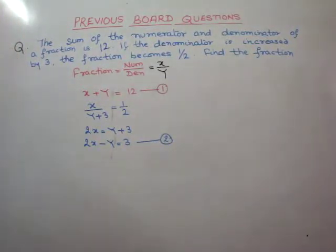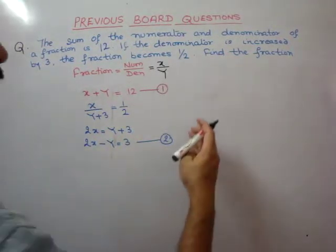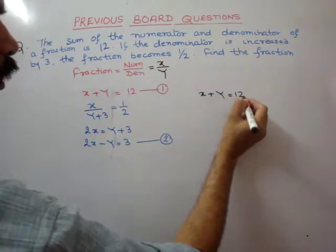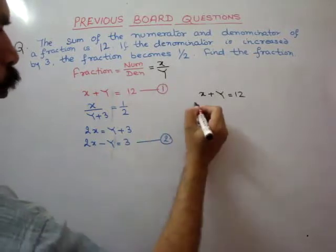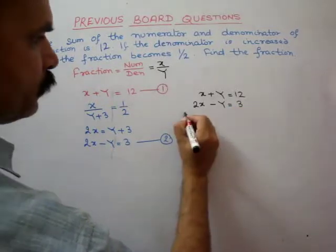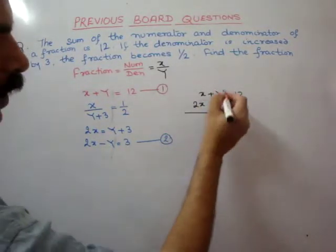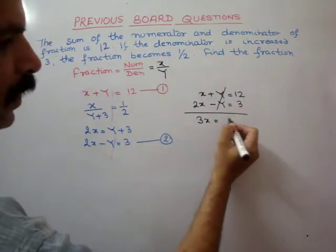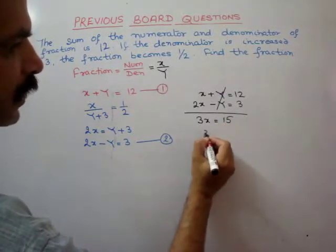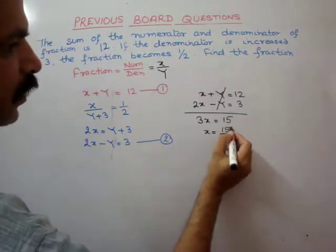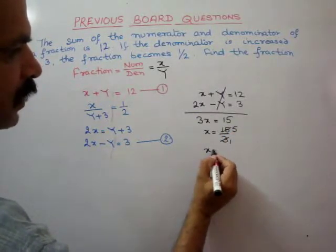Second equation hai hamara. Ab dono equations ko saath mein likhenge: x plus y is equal to 12, aur 2x minus y is equal to 3. Eliminate karte hain y ko — toh hamara aa gaya 3x is equal to 15. Toh x is equal to 15 by 3, x is equal to 5.